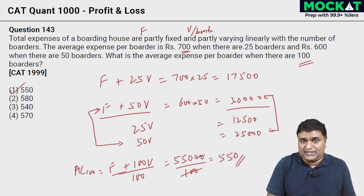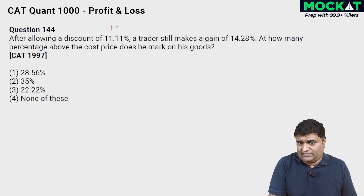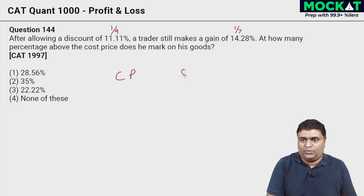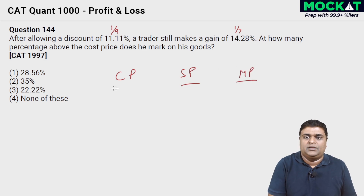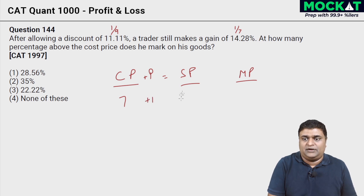After allowing a discount of 11.11 percent — which is one ninth — the trader still makes a gain of 14.28 percent — roughly one seventh. At how many percentage above the cost price does he mark his goods? If there's a gain of one seventh, let cost price be 7 rupees. One seventh of that is 1 rupee profit, making selling price 8 rupees.